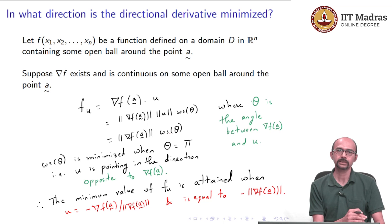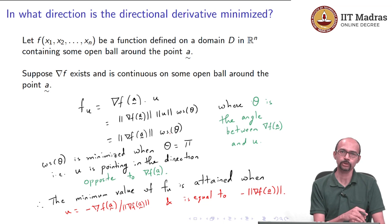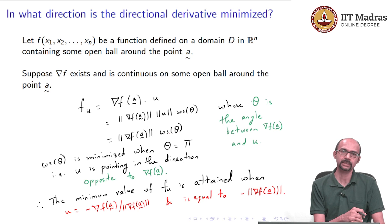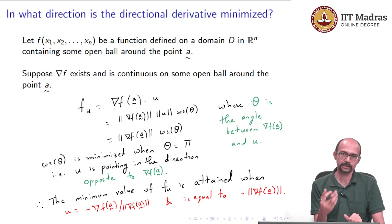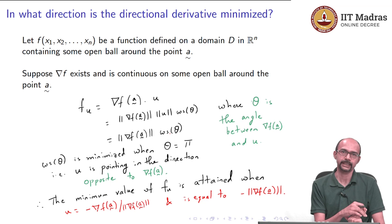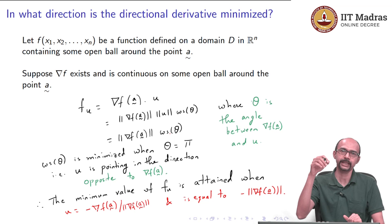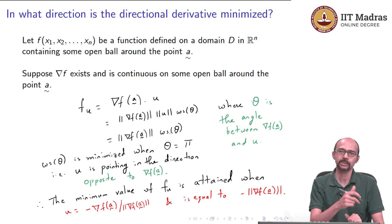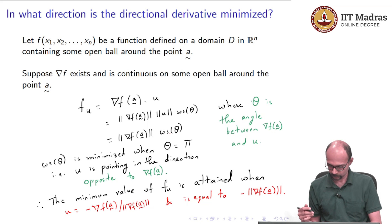This answers the original question. If water flows in the steepest direction downwards, it happens in the direction of minus the gradient of h at the point (x, y). At each point, you should take minus the gradient of h at (x, y), and that will be the direction in which the water moves.